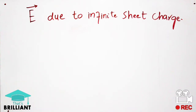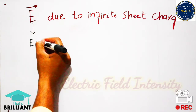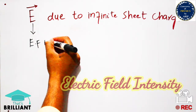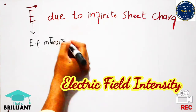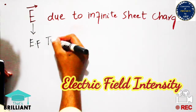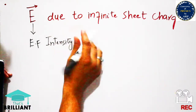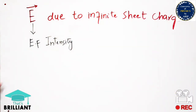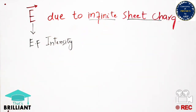Hi guys, welcome to my YouTube channel. Today I will discuss electric field intensity due to an infinite sheet of charge. E represents the electric field intensity, and this is a very important topic of electrostatics in which all the charges are stationary or at rest. We will find out the electric field intensity in order to understand its effect on the infinite sheet of charge.